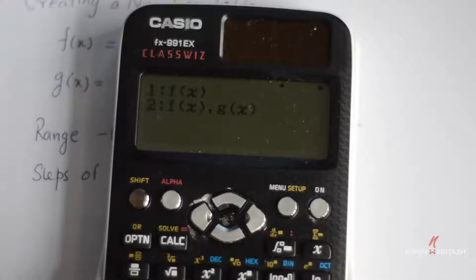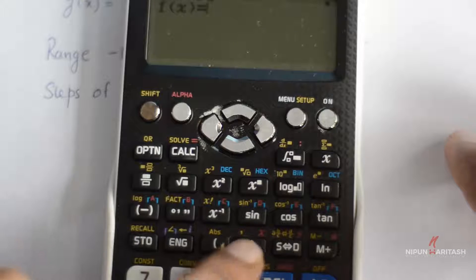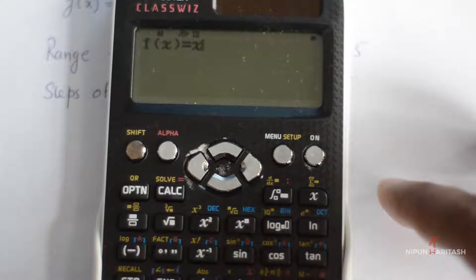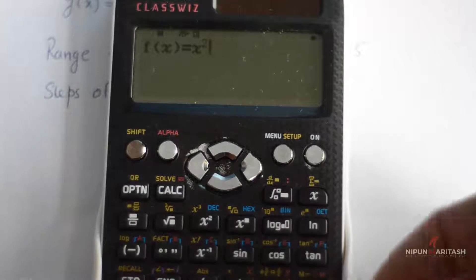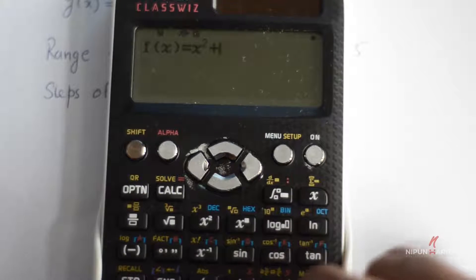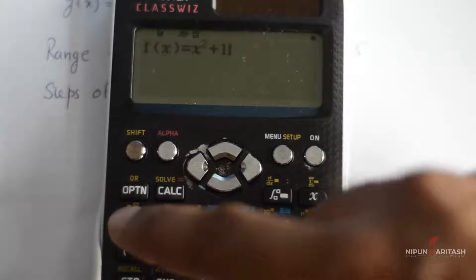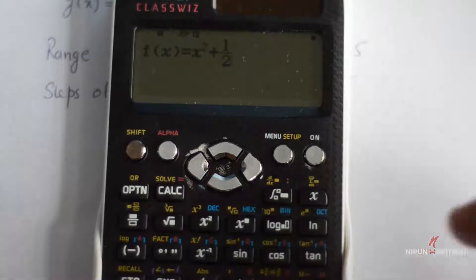So I will say 2 and now the first equation is x² plus half so what we do is I will press alpha and then 6 and then I will press square and a plus sign. Then 1 and this is my first equation.